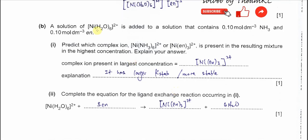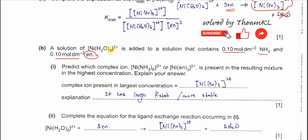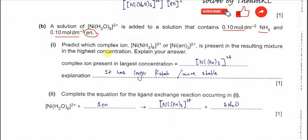Part B. A solution of nickel hexa aqua complex is added to a solution that contains 0.1 mol per dm cubed ammonia and 0.1 mol per dm cubed EN. Same concentration, but we know that EN will try to form the complex because the nickel with this EN complex ion is more stable from the tables we know. Predict which complex ion is present in the resulting mixture with highest concentration. Of course this one is more stable. The K_stab is higher, so this one will form more. Your prediction should be this: the nickel with 3 EN.